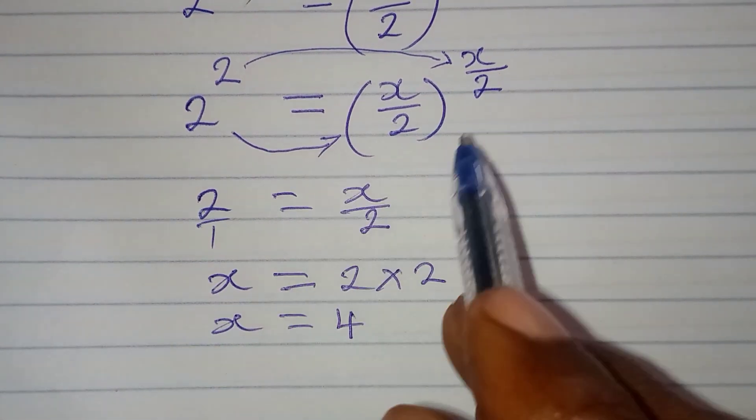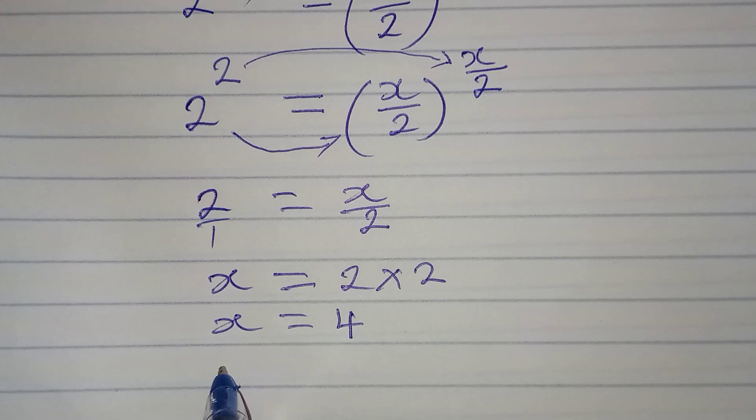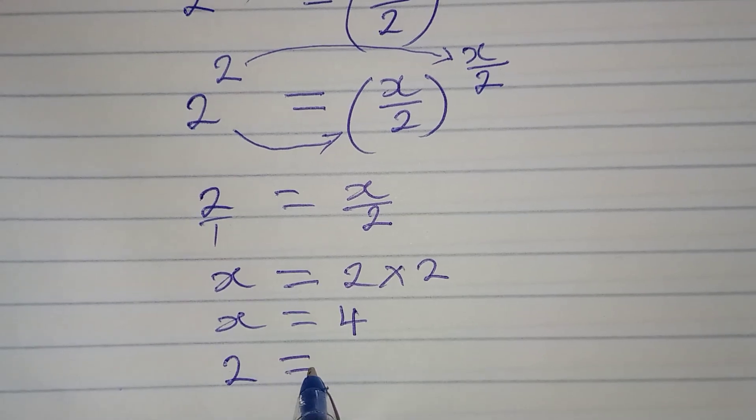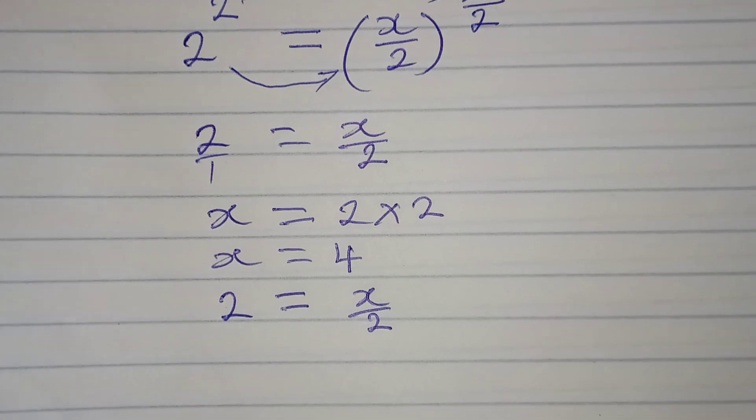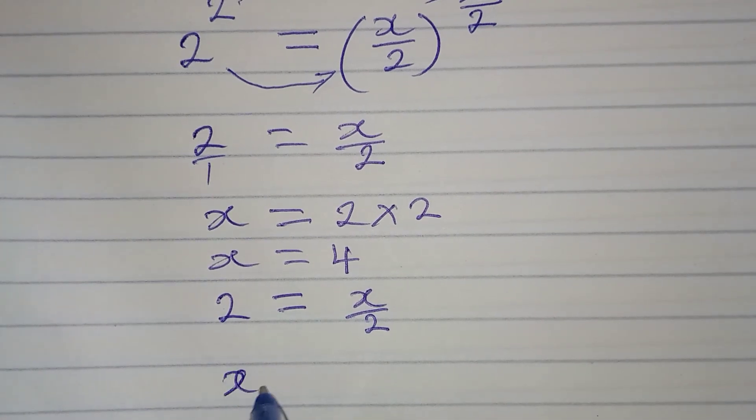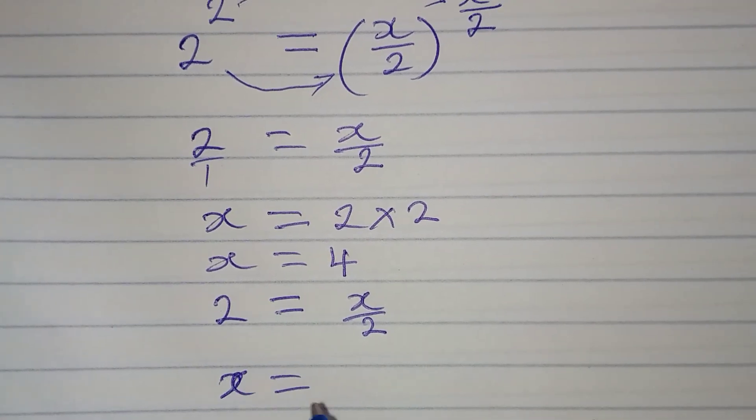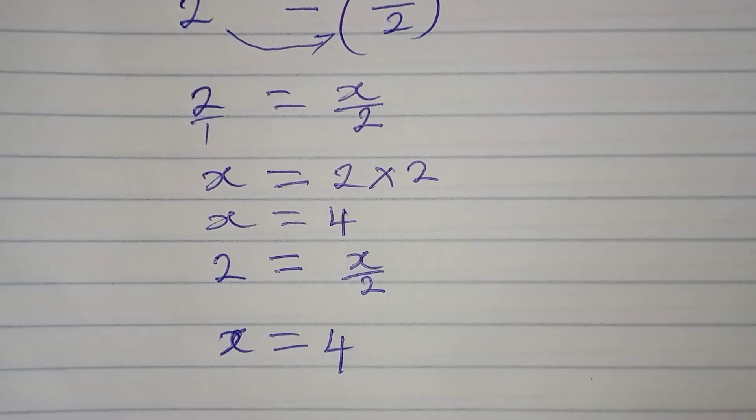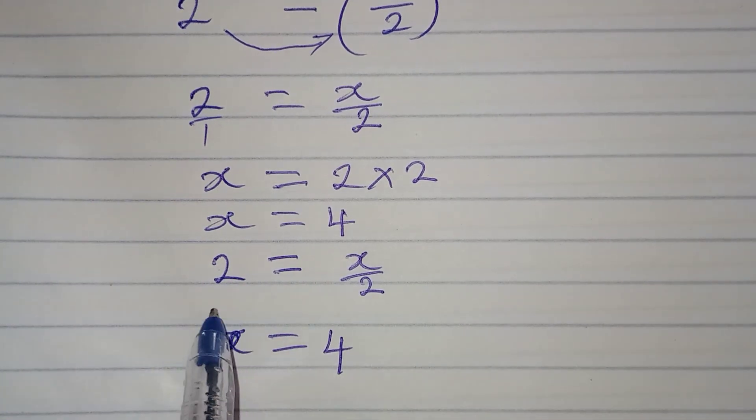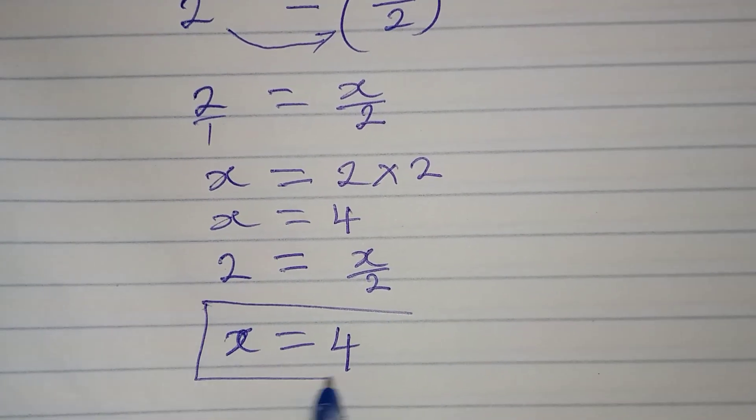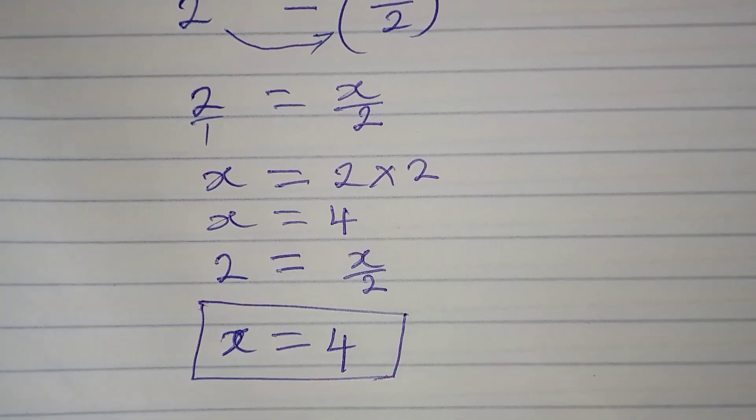And then if I am also to compare the powers, we will have that 2 is also equal to x over 2. And if I do the same thing, x will be equal to 2 times 2, which will give us 4. So x is still 4. So therefore, we can conclude that the value of x is equal to 4.